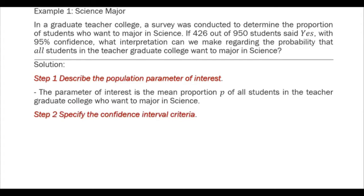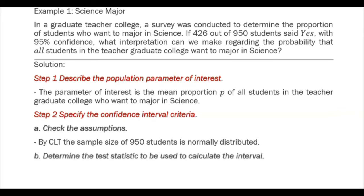Step 2: Specify the confidence interval criteria. Check the assumption. By central limit theorem, the sample size of 950 students is normally distributed. Determine the test statistic. The test statistic is p.